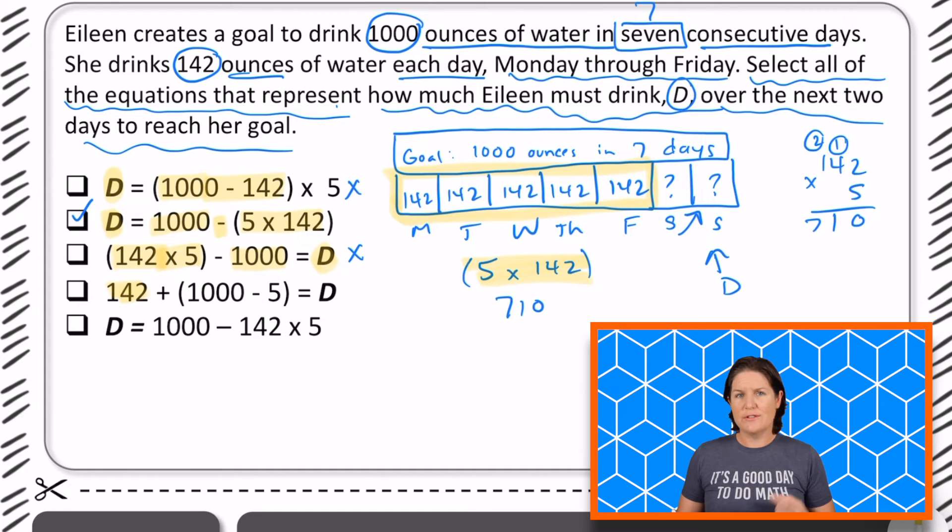She drinks 142 ounces. Well, that's a problem because it's not being multiplied by five for those five days. And then we add that to 1000 minus five. Is that looking right? No, let's eliminate that one.